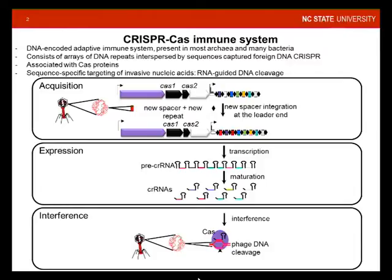The first step — the adaptive step — is the acquisition of novel spacers to build novel immunity. This step generally concerns Cas1 and Cas2. Those Cas proteins recognize foreign DNA and specifically, selectively sample a piece of that DNA for integration as a new spacer, together with a new repeat, at one end called a leader end of the repeat-spacer array.